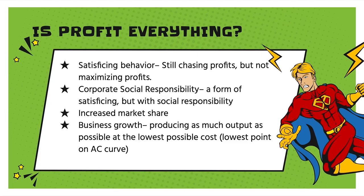Not all firms seek to maximize their profit. All firms are certainly interested in profit, but some firms will produce short of the profit-maximizing level because they're looking to satisfy certain other behaviors. This is called satisficing behavior — because they're not chasing maximum profits. This could be because firms are interested in social responsibility. Most major corporations have some policy around corporate social responsibility, which might eat into profits but serves the welfare and health of communities.